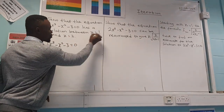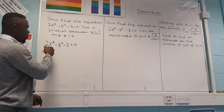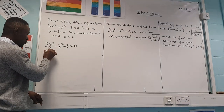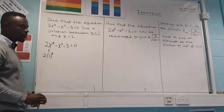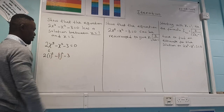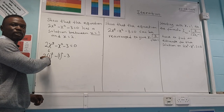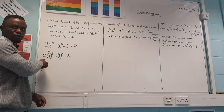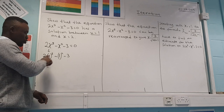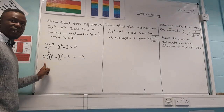Substituting x = 1: wherever I see x I put 1. So it becomes 2 × 1³ − 1² − 3. Now, 1 cubed is 1 and 1 squared is 1, so this becomes 2 − 1 − 3 = −2. So when you substitute x = 1, you get −2.